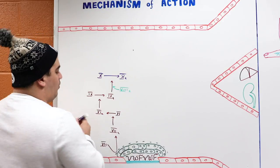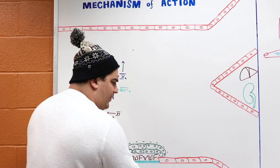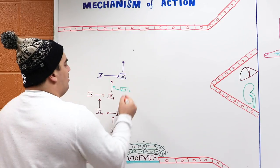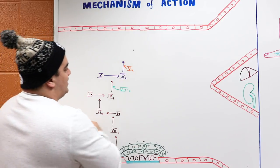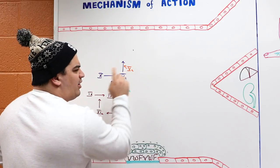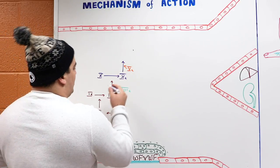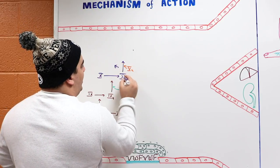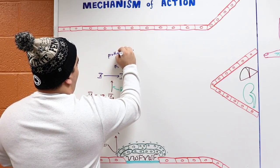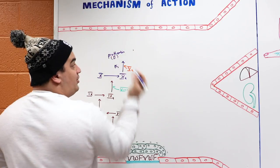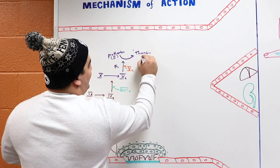Factor 10 then combines with another factor called factor 5. Factor 5 is activated by thrombin. Factor 5 and factor 10, along with platelet factor 3, turn another molecule called prothrombin — factor 2 — into its activated form, thrombin.